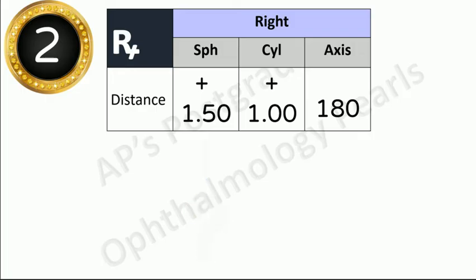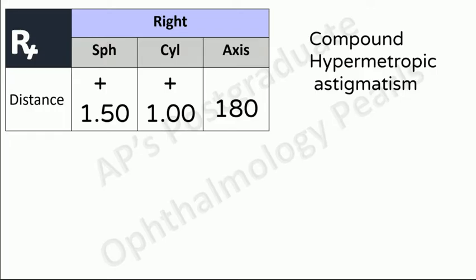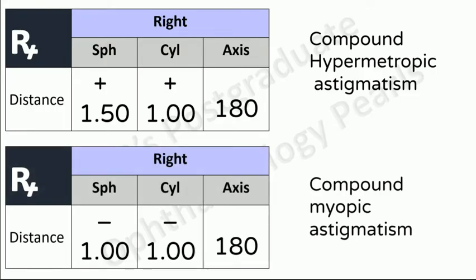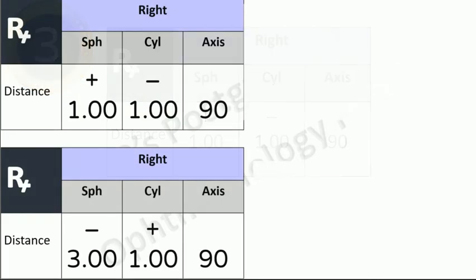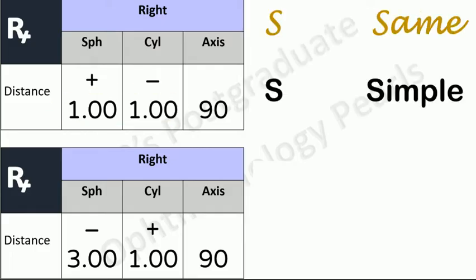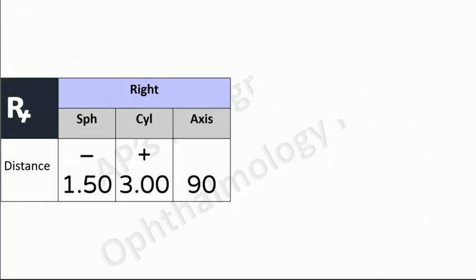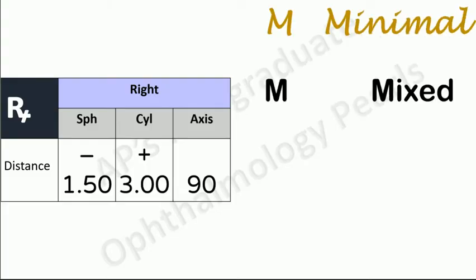If there is a number in the sphere column, compare the signs of the sphere and cylinder. If both are the same, then it is a compound astigmatism — if both are plus, it is compound hypermetropic astigmatism, and if both are minus, it is compound myopic astigmatism. Next, if the signs are not the same, compare the numerical values: if the sphere and cylinder are numerically equal, it is simple astigmatism. If the sphere is numerically higher, it is the chief, so it is compound astigmatism. If the sphere is lower or minimal compared to the cylinder, it is mixed astigmatism.